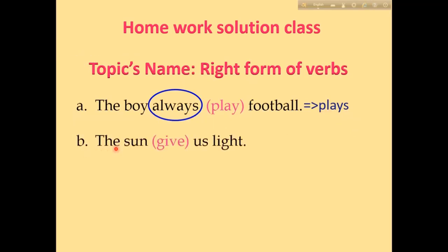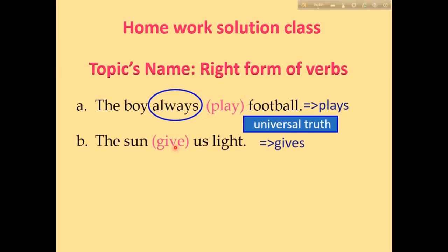Number B: 'The sun give us light.' This sentence is a universal truth, so this sentence is in present indefinite tense. 'Give' is the verb here, so the correct form is 'gives.' The subject 'the sun' is third person singular number, so S has been added to the verb.